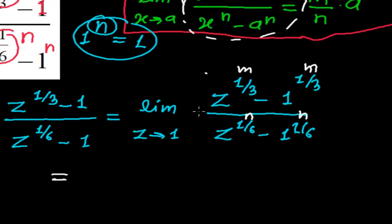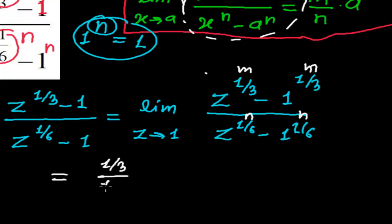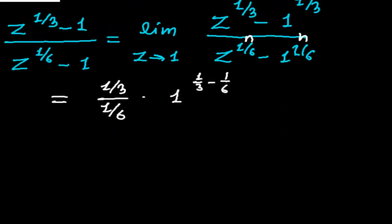Applying the formula: m by n, that is 1/3 divided by 1/6, times a to the power m minus n — where a is 1, to the power 1/3 minus 1/6.